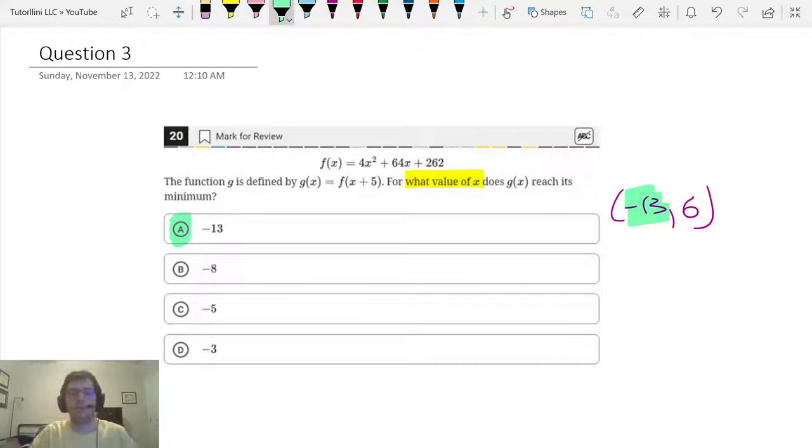Again, if it said, what is the minimum of g of x or what is the maximum of g of x, you want the y value. It just so happened that in these questions, they were asking for the x value. They totally could have asked you for the y value. They just would have left out that part for what value of x. So just keep that in mind. And you'd hate to get this question wrong just because you mixed up x and y.